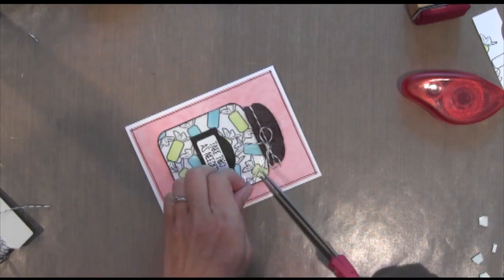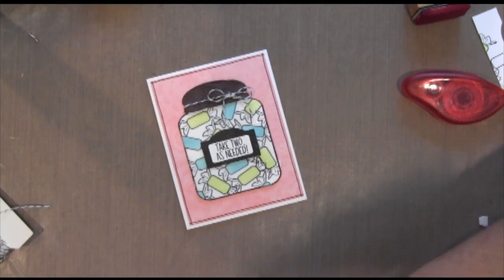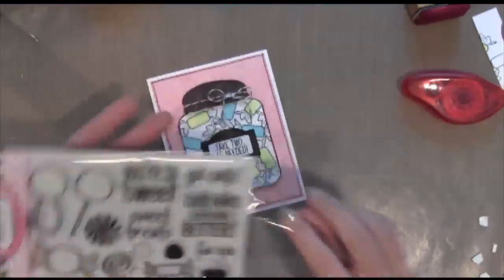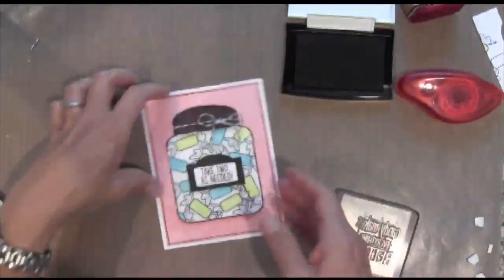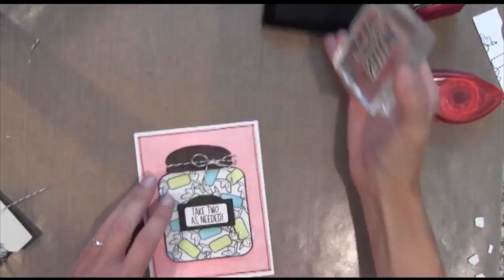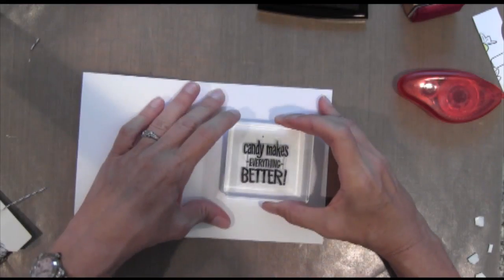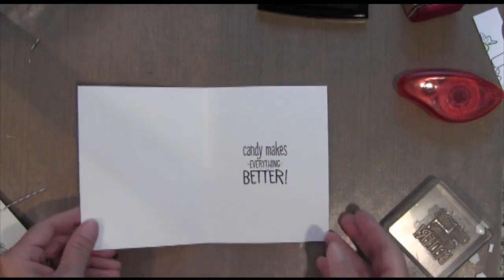And then I'm going to trim off that Baker's twine and then I have another sentiment I'm going to put on the inside from the same candy set. And I'm going to use VersaFine ink. It worked really well with these stamps. I was really happy with it.